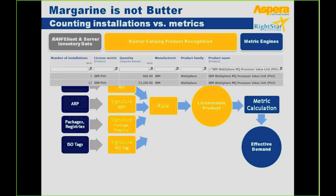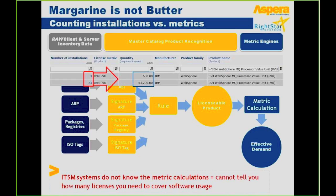A good example is to refer to an IBM product — let's say IBM WebSphere MQ Processor, licensed by PVU. The software inventory — which would be an inventory you could probably find in your ITSM tool — shows the number of installs. In the first line, we see there are three installs; in the second line, there are 23 installs. But for compliance reporting and any SAM-related reporting, you would like to know the effective demand — what you have to prove against IBM in your compliance report. And the PVU count is not 23 installs; it is 53,200 PVUs based on the topology you deployed this WebSphere product on. ITSM systems don't know this. They don't know the metric calculation and cannot tell you how many licenses you need to cover your software usage.